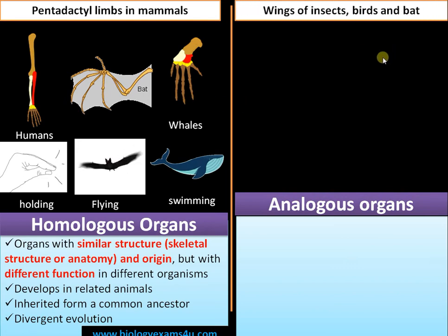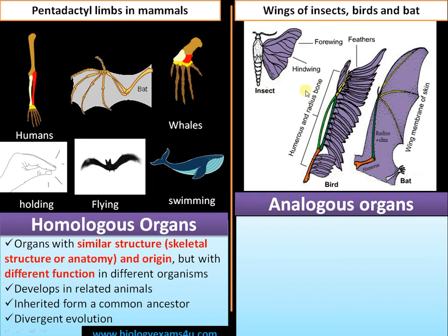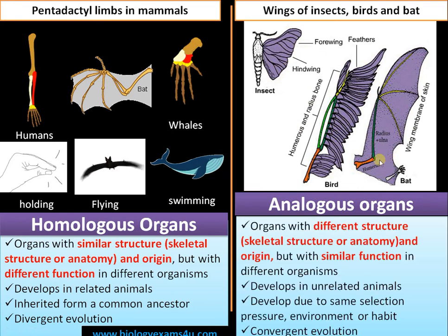There is no structural similarity between these three groups. The wings don't have any structural similarity, but they have the same function. They have different structures in skeletal structure and also in origin, but perform a common, similar function in different organisms.